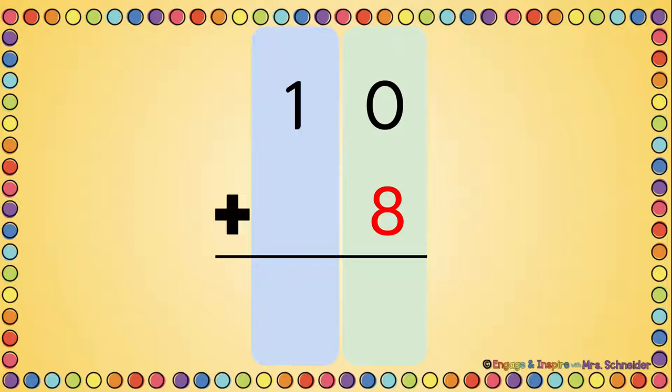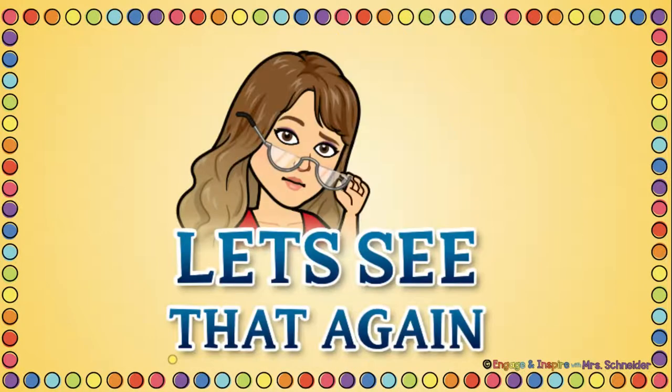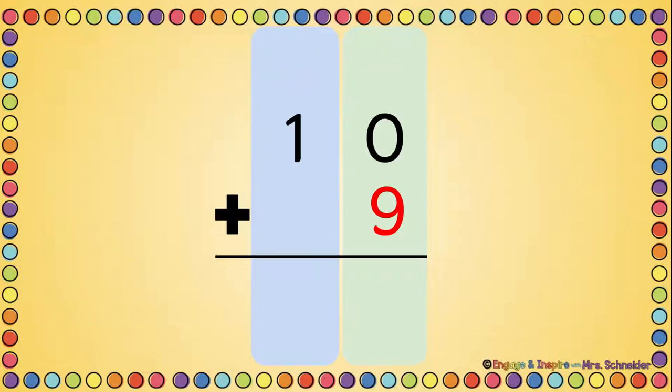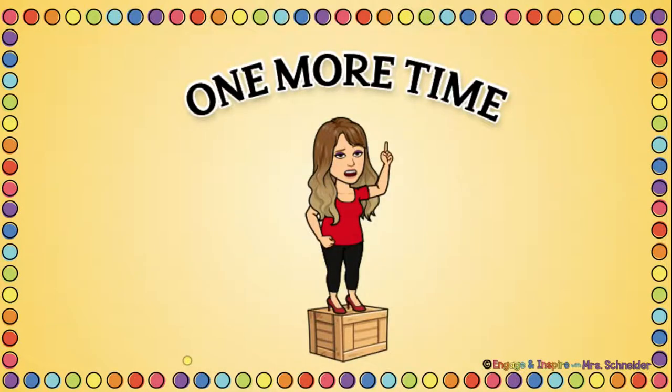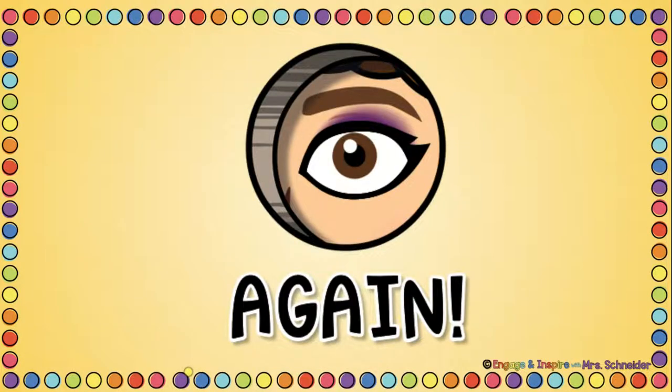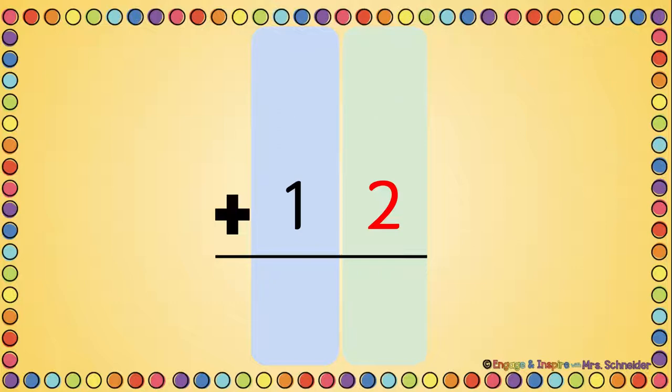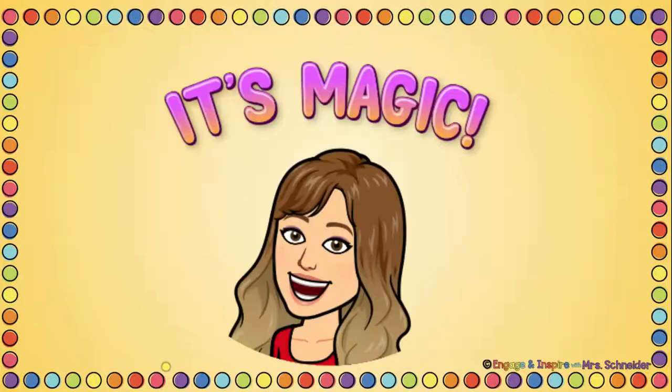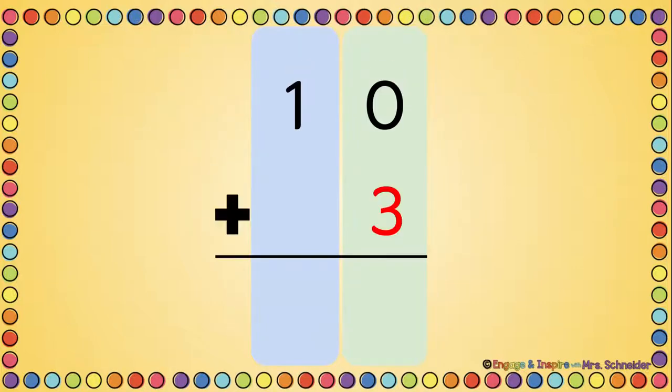Watch this. 10 plus 8 is 18. Let's see that again. 10 plus 9 is 19. One more time. 10 plus 1 is 11. Again. 10 plus 2 is 12. It's magic. 10 plus 3 is 13.